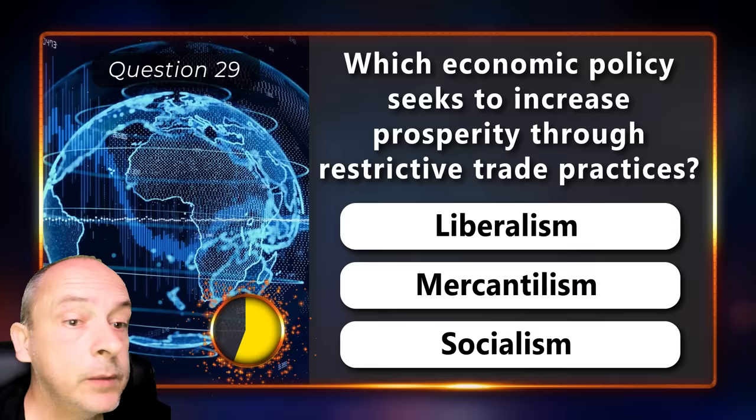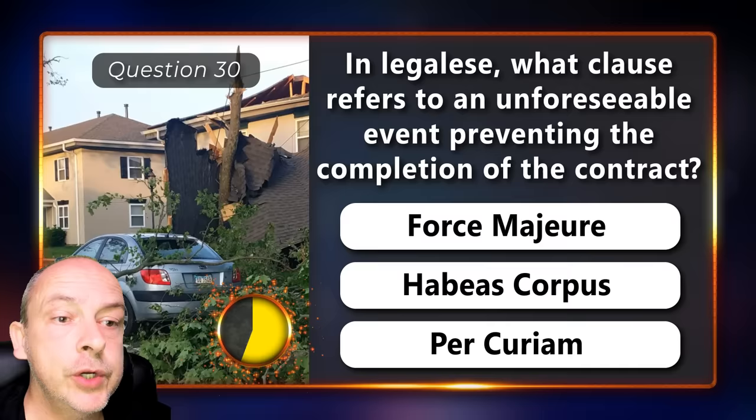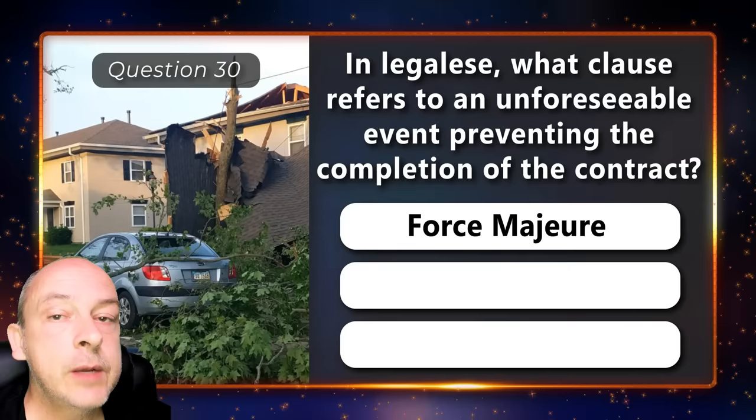Which economic policy seeks to increase prosperity through restrictive trade practices? Liberalism, mercantilism, or socialism? Mercantilism. What is the term for an unforeseeable circumstance — Force Majeure, Habeus Corpus, or Percurium? Force Majeure.